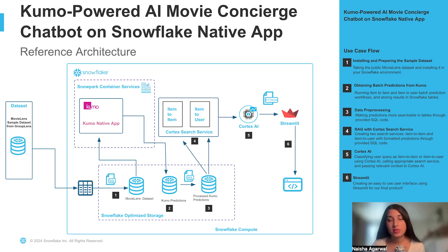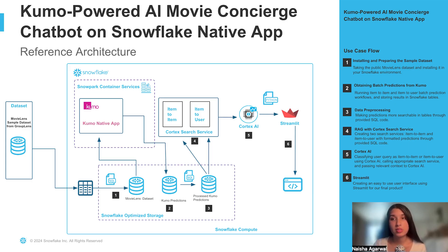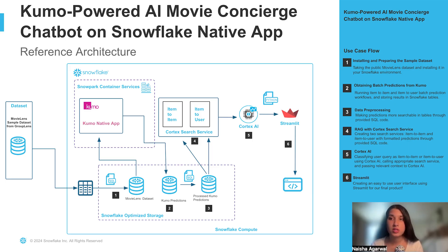We started off using the MovieLens dataset from GroupLens — this is a publicly available dataset. We then pass this into Kumo and run two batch prediction workflows, one for item-to-item and one for item-to-user. We then store these results in Snowflake tables. The Kumo batch prediction workflows return a set of embeddings and a set of predictions. For this use case, we're not too concerned about using the embeddings, so we just store the predictions in Snowflake tables.